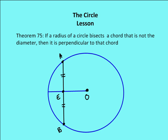Theorem 75: if a radius of a circle bisects a chord that is not the diameter, then it is perpendicular to the chord. OE is congruent to itself by the reflexive property, and OA and OB are congruent because all radii of a circle are congruent. This gives two triangles congruent by SSS: triangle AOE and triangle BOE. Therefore angle AEO and angle BEO are congruent, and since they are congruent and supplementary, they must be right angles, so OE is perpendicular to AB.